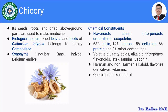Furthermore, Chicory comprises volatile oils, fatty acids, alkaloids, triterpenes, flavonoids, latex, tannins, and saponins. Saponins are one component present in Cichorium which has certain health benefits. Then hormonal and non-hormonal alkaloids, flavone derivatives, and certain vitamins are present in Cichorium. Furthermore, Cichorium comprises quercetin and kaempferol. These are the chemical constituents of Cichorium.